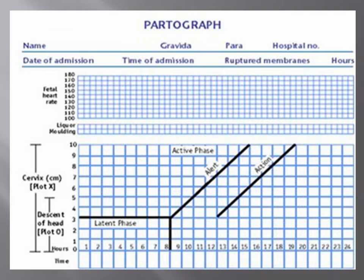If the patient is not having adequate contractions, we can help with a Syntocinon drip: two units of Syntocinon in 500 cc of normal saline, starting at 15 drops per minute. If the patient does not have contractions, we can double the dose to 30 drops per minute, then to 60 drops per minute. Beyond 60 drops per minute we can double the dose of Syntocinon rather than the fluid, because more fluid can lead to water intoxication.